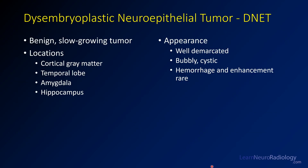What you're dealing with in this case is a DNET, or disembryoplastic neuroepithelial tumor. These are benign, slow-growing tumors that most often occur in the cortical gray matter. The temporal lobe — particularly the anterior temporal lobe, amygdala, and hippocampus — is a very common location. The classic description is a bubbly cystic lesion. So if you see a bubbly cystic lesion of the temporal lobe, think about a DNET. Hemorrhage and enhancement are rare; you can have a little bit of enhancement, as in this case, but rarely more than that.